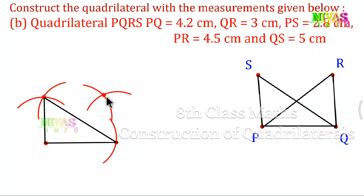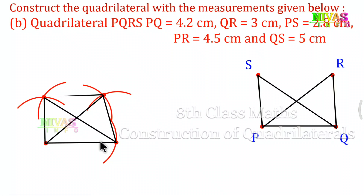Now the point R is found. Draw lines from P and S to R. This completes the quadrilateral PQRS. Next, mention the names of the points, and label the sides and diagonals.